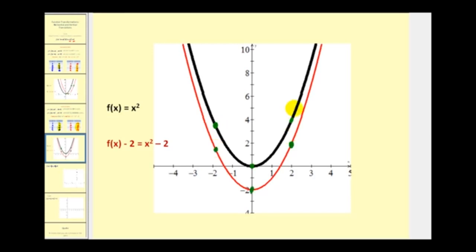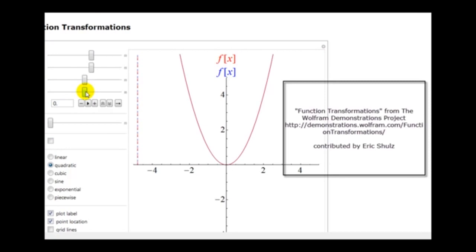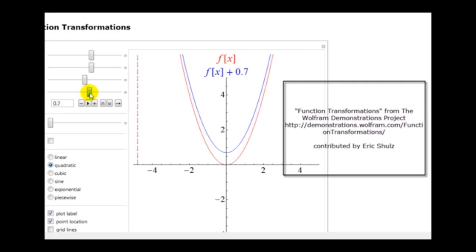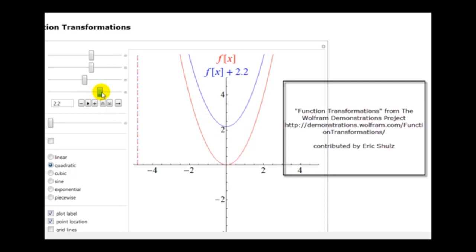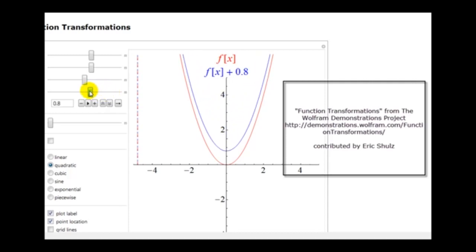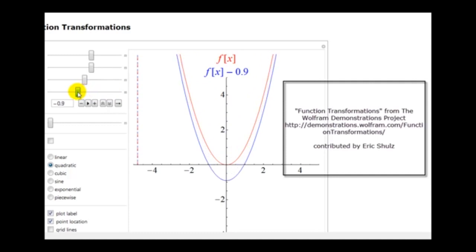Let's look at an animation of the vertical shift. As we change the value of d, we see how it affects the graph — the translated graph is in blue. As we increase d, the function is shifted upward. With f of x minus d, the function shifts down from the original.